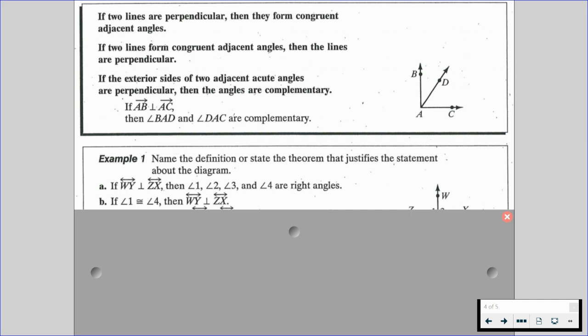Statement B: if angle 1 is congruent to angle 4, then line WY is perpendicular to line ZX. And C: if the measure of angle 1 is equal to 90, then line WY is perpendicular to line ZX. We're given the diagram on the right-hand side.